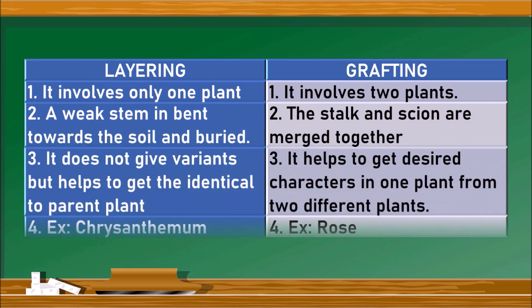In layering, a weak stem is bent towards the soil and buried. But in grafting, the stock and scion are merged together. In layering, it does not give variants but helps to get the identical to the parent plants. But grafting helps to get desired characters in one plant from two different plants.